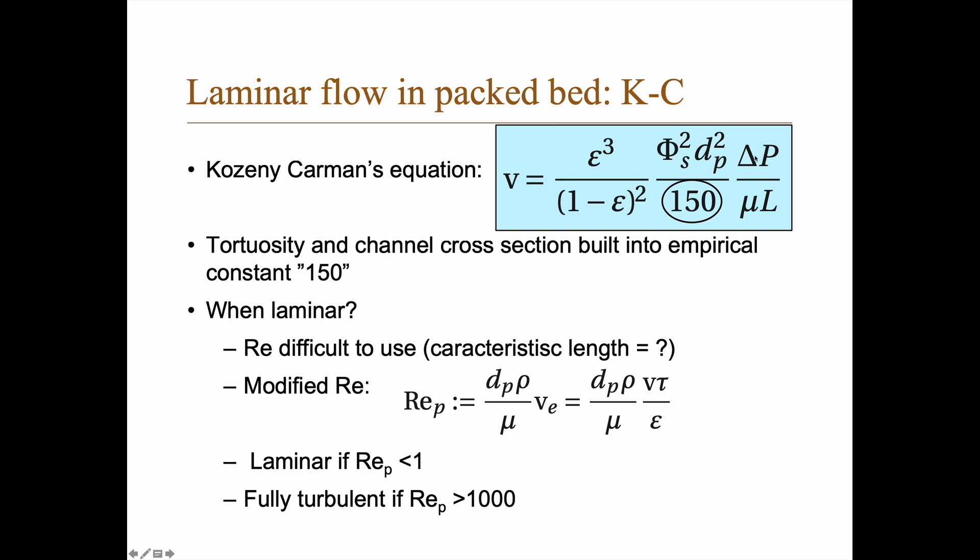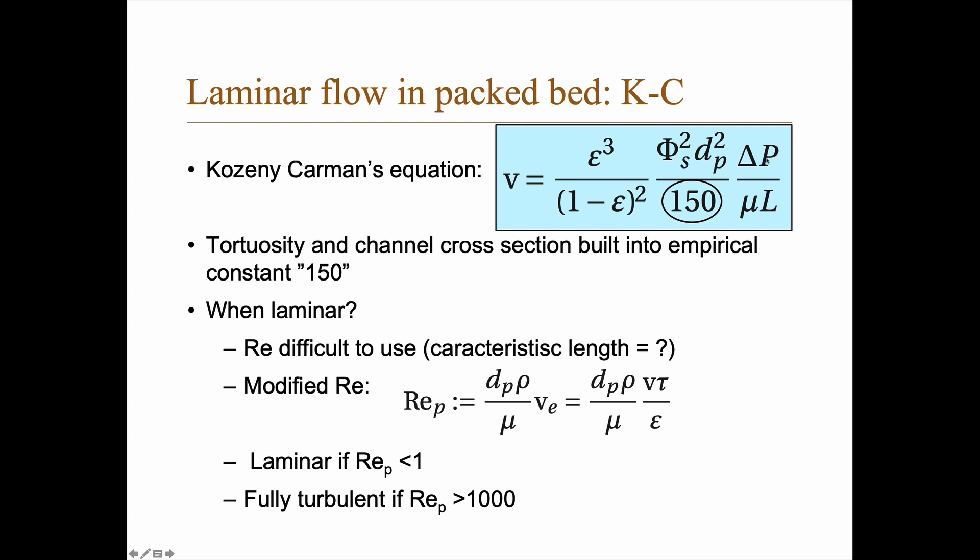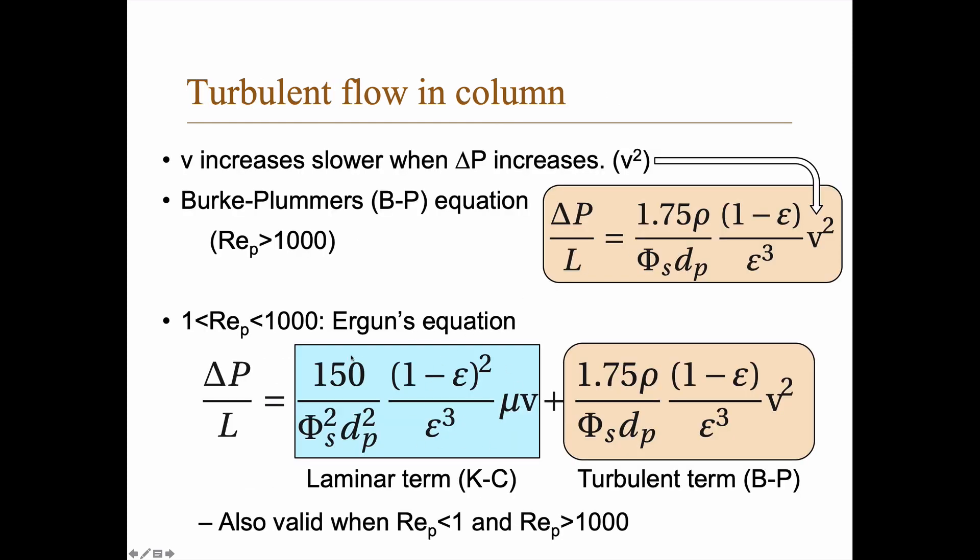And actually, if you see that you have delta P divided by L there, if you look at this equation, delta P divided by L, well, you move things to the other side and you're left with this. And here you see clearly that we have V in the laminar term that comes from Kozeny-Karman. And we have V squared in the turbulent term, which comes from the Burke-Plummers equation.